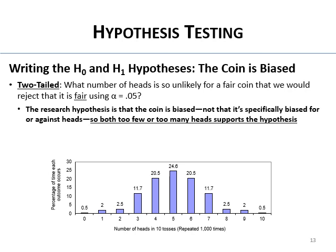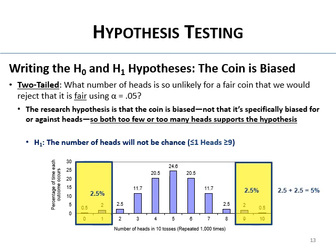The research hypothesis is that the coin is biased — not specifically for or against heads — so both too few and too many heads support it. The alternative would be that the number of heads will not be chance — that is, we'll get one or fewer or nine or more. That corresponds to the lower 2.5% and upper 2.5%, totaling 5%. If we land in one of those two regions we say the coin is biased. The null then is getting between two and eight heads — that's consistent with a fair coin.